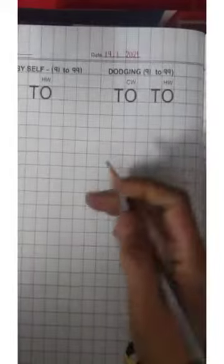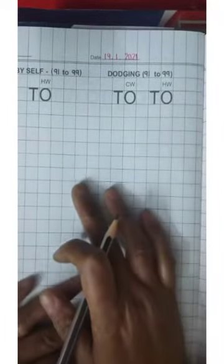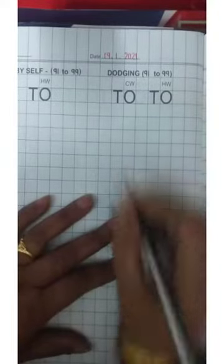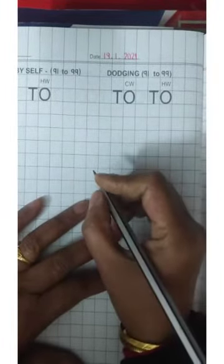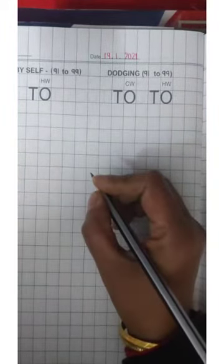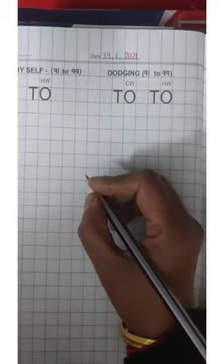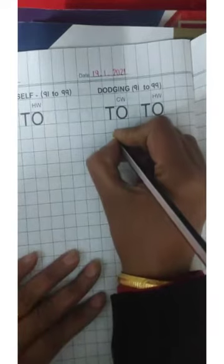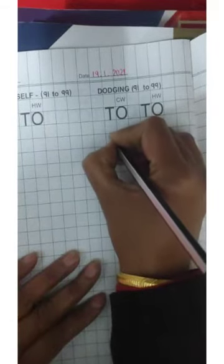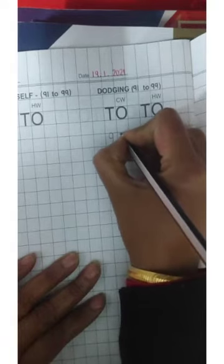Now first ma'am will speak the numbers. First number ma'am will take 97. 97. 90 sound is coming. You have to write first 9. 97.